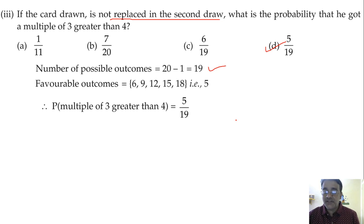This doubt can occur, that in the first draw we have removed which card. So that is why that should be specified. If the card drawn in the first draw is number 2 and it is not replaced in the second draw, what is the probability that he got a multiple of 3 greater than 4? Then there will be no doubt.